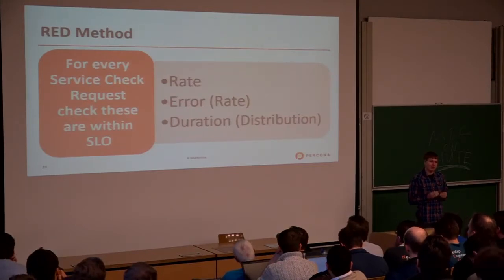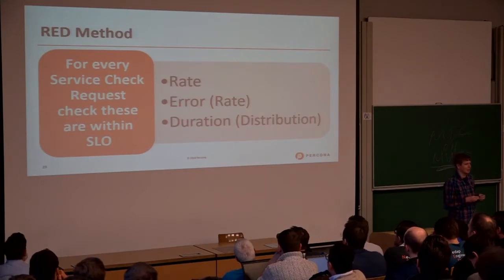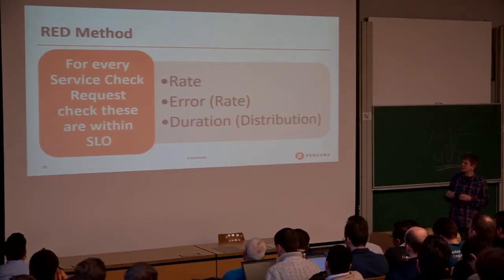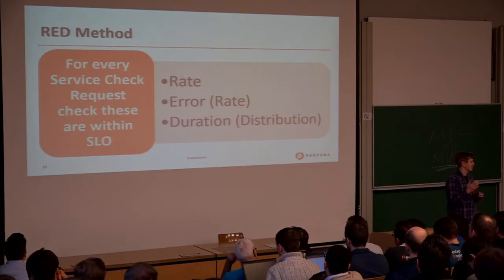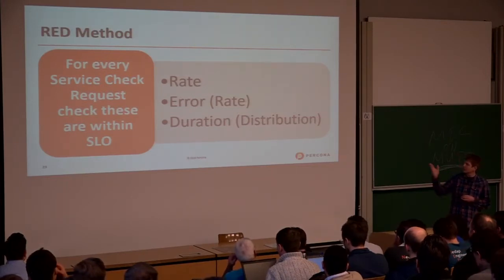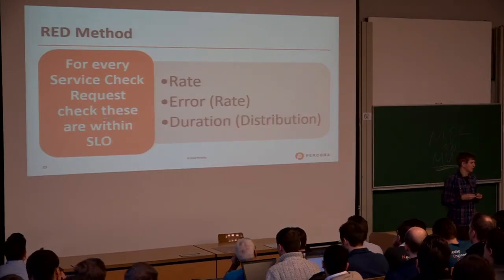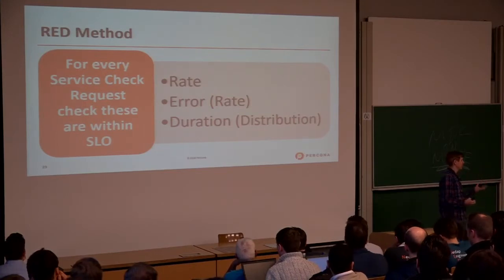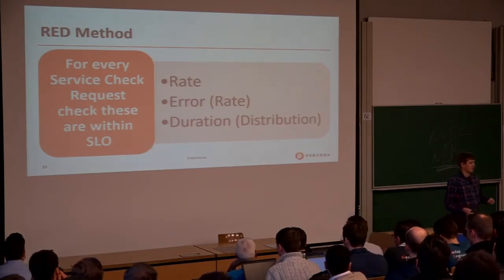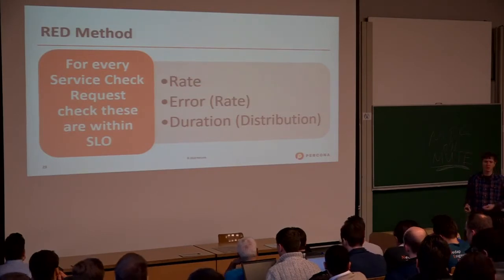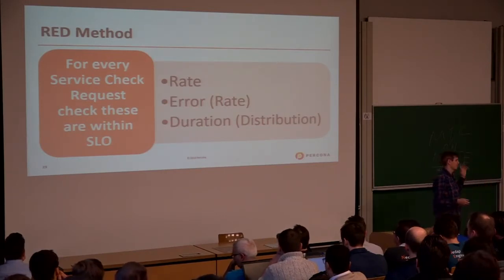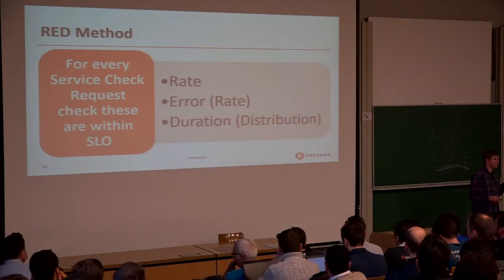The RED Method says: for each service, check what those items are within SLO — Service Level Objective. That stands for Rate, Error rate, and Duration, where duration talks about response time distribution. So for example, for a given service I should say: this resource should be able to handle up to a thousand requests per second, there should be no more than one error per million, and I should get 99% of responses in 10 milliseconds — something like that.